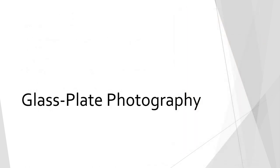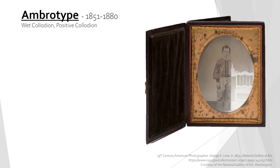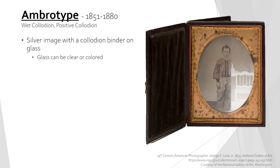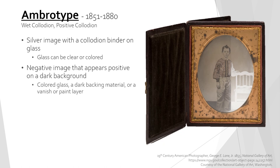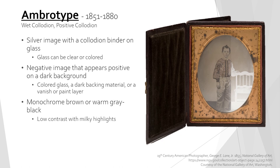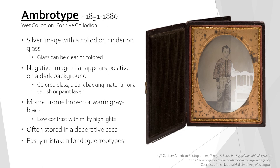The next section is glass plate photography. Ambrotypes were created from 1851 to 1880. They are silver images with a collodion binder on a glass plate which can be clear or colored. The image is actually a negative that only appears as a positive image when placed over a dark background, as demonstrated with the example on the right. This background can be a dark colored glass support, a dark backing material such as cloth or metal, or a layer of varnish or paint applied to the back of the glass. The image is monochrome in brown or a warm gray black and has a low contrast with milky gray highlights. Ambrotypes are often stored in decorative cases and can be easily mistaken for daguerreotypes. Ambrotypes will only be a positive or a negative image — they do not change with the angle of viewing, unlike daguerreotypes.